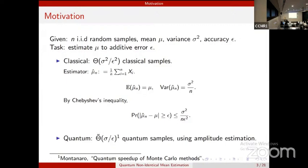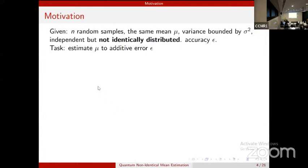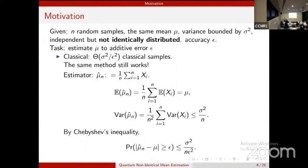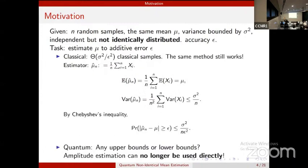But this is only for the IID case. What happens if those random samples are still independent, but not identically distributed? For classical computers, the sample mean estimator still works — the expectation is still mu and the variance is bounded by sigma squared over n, so the same upper bound holds. But for quantum computers, the former method is not applicable because the non-identity means the amplitude estimation method can no longer be used directly. Do we still have some quantum algorithm to achieve speedup, or are there fundamental limits? This is what our paper answers.